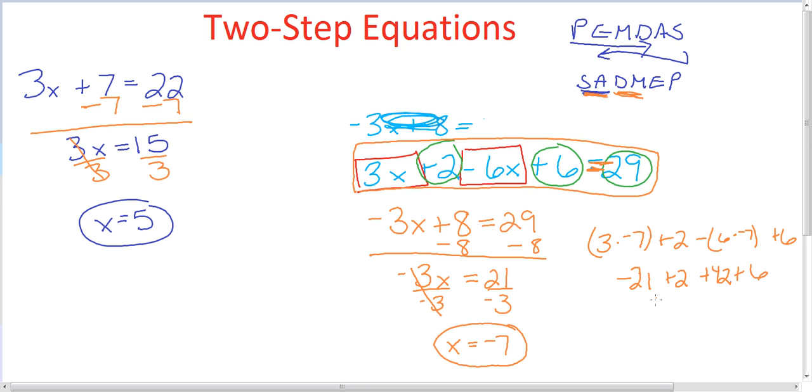So negative 21 plus 2 is a negative 19 plus 42 plus 6. I'm going to combine these because it's easier, so we have negative 19 plus 48, and that's going to give us a positive 29.